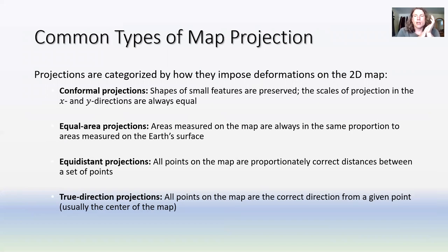Equal area projections are useful because all areas measured on the map are always in the same proportion to how they measure on the Earth's surface, which is not true of conformal projection. The Mercator projection inflates the size of areas near the poles. Equal area projections don't do that. They might distort the shape and how they appear, but they don't distort the area.